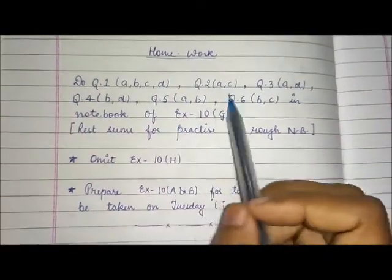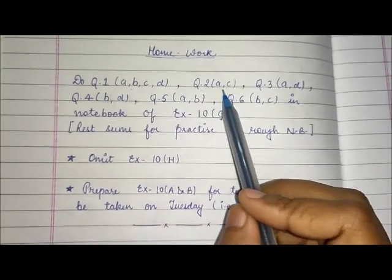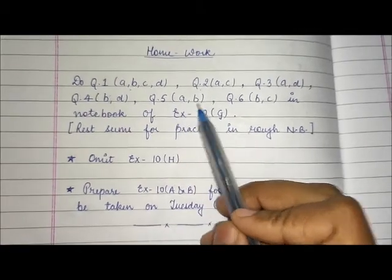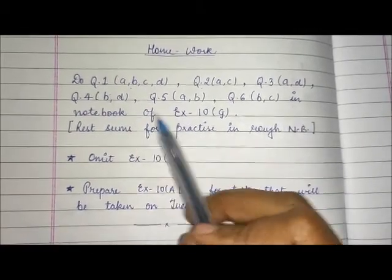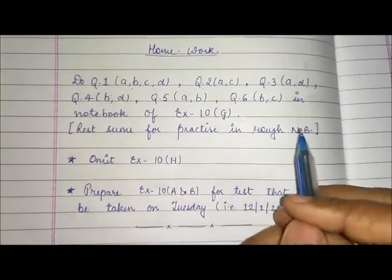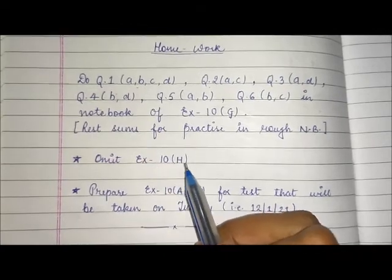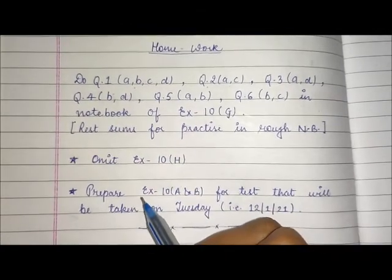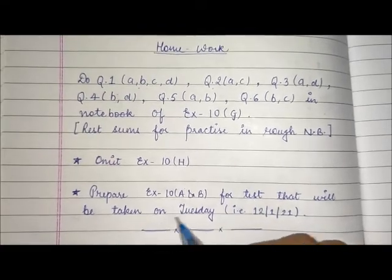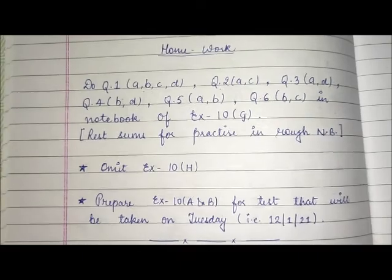So children, this is your homework. You have to do question number 1 parts A, B, C, D; question 2 parts A and C; question 3 parts A and D; question 4 parts B and D; question 5 parts A and B; question 6 part B and C — in your notebook for exercise 10G. The rest of the sums are for practice in your rough notebook. You have to omit exercise 10H, and prepare exercises 10A and 10B for a test on Tuesday, 12th January. Thank you.